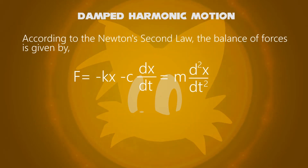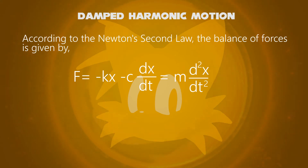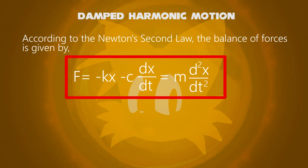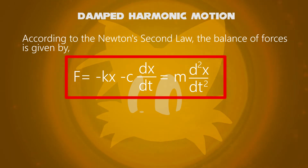According to Newton's second law, the balance of force is given by: f equals minus kx, minus c times dx/dt, equal to m times d²x/dt².